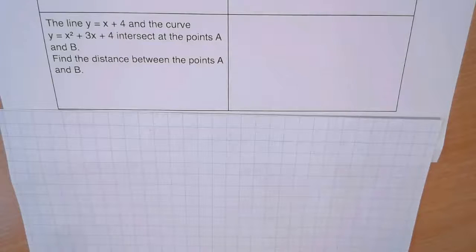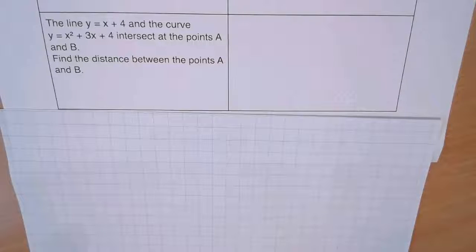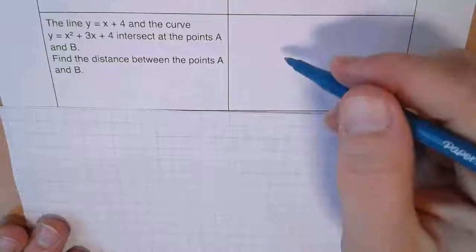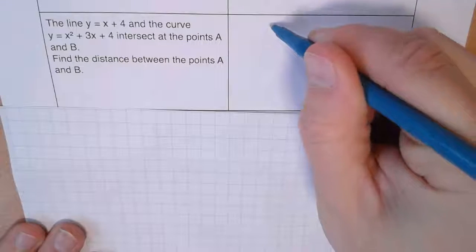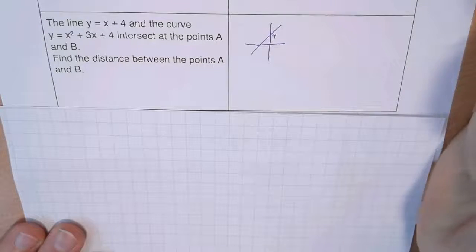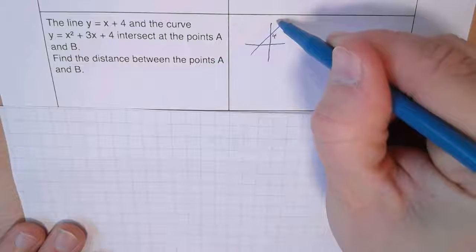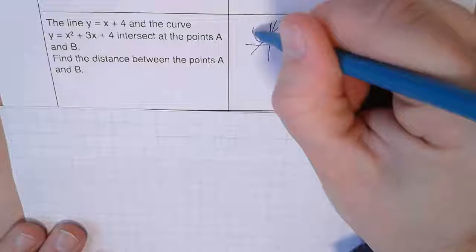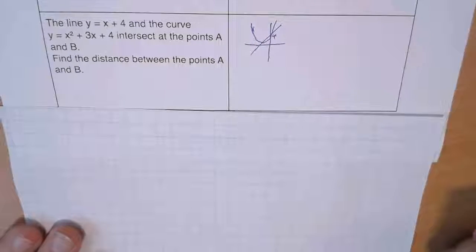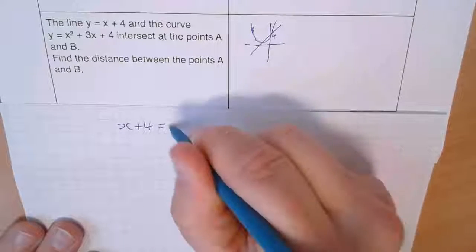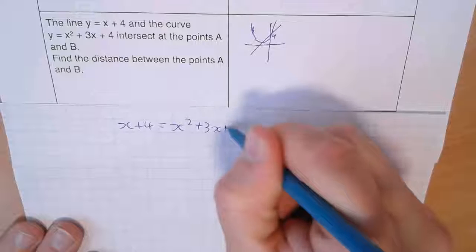The line y = 4 and the curve y = x²+3x+4 intersect at points A and B. Find the distance between A and B. I'd encourage a rough sketch: the line y=4 is horizontal, and x²+3x+4 passes through (0,4), so it looks something like a parabola touching or crossing that line. They intersect when 4 = x²+3x+4.